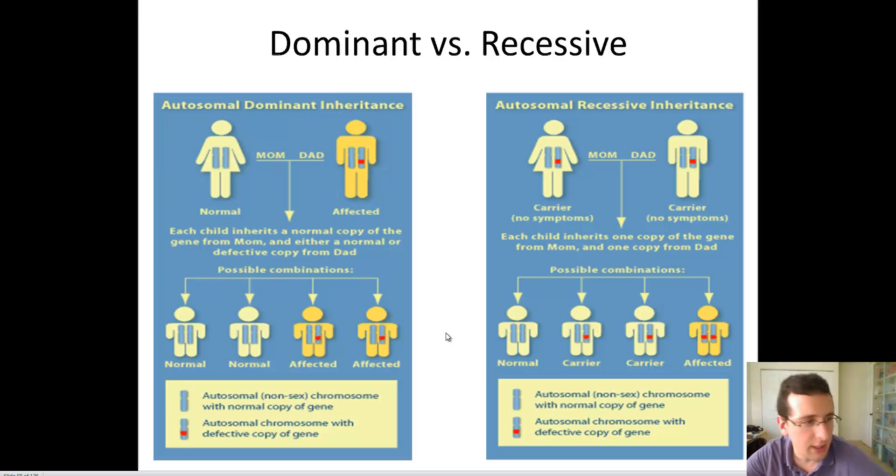So it's very rare to see a dominant sex disorder. Most sex disorders are usually recessive. Dominant sex disorders typically cause death, and that's why we don't see them much.